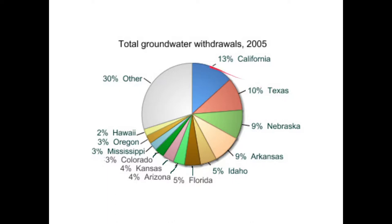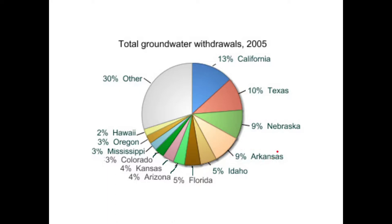We're Arkansans. This is the total amount of groundwater withdrawal by state back in 2005, probably similar today. The top user is California, then Texas. That makes sense - big states with lots of people. However, Nebraska and especially Arkansas account for 9% - we are number four of all 50 states in groundwater usage, which is kind of wild. Arkansas only has about 3 million people, about 1% of the country's population, but we use 9% of all groundwater taken out.